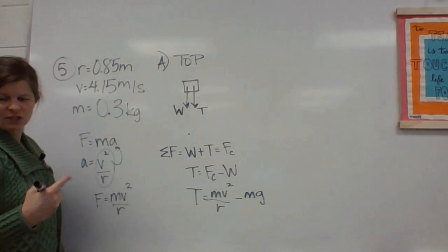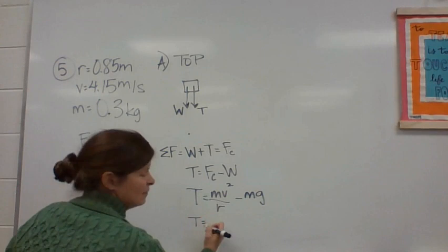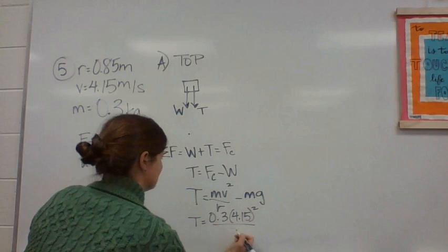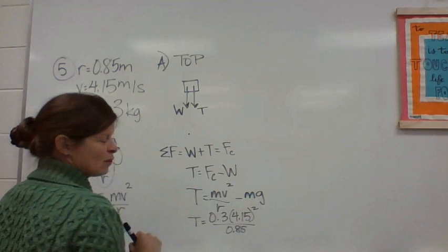So now it's just a matter of plugging these things in. So I get T equals, yep, you can see it, 0.3 times 4.15 squared divided by the radius of 0.85. Remember order of operations? So I'm going to square the velocity and then multiply by the mass. Don't square the entire top. That's a big no-no.